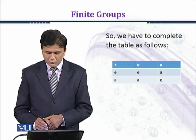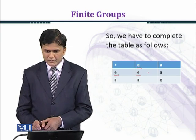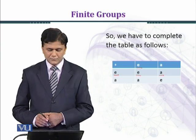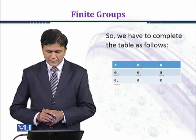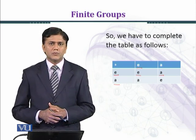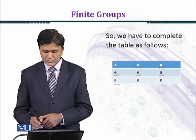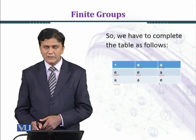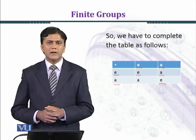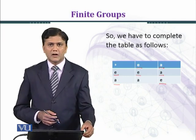In the table: E star E equals E, E star A equals A, A star E equals A, and A star A equals E. As seen, A star A is taken as E, so the group is generated by A and it is a cyclic group.